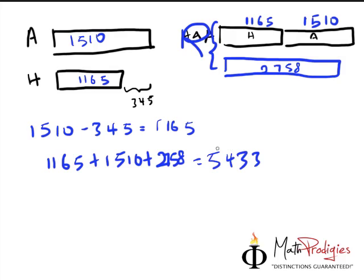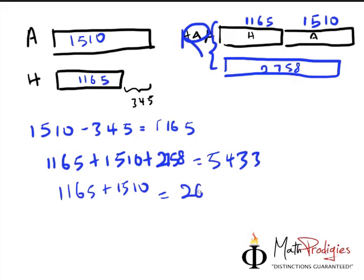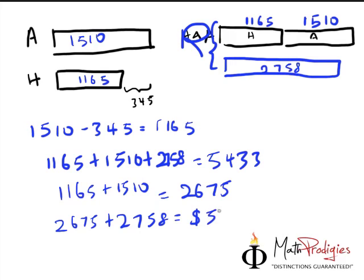So that is the answer. Alternatively, you can do it step by step: 1,165 plus 1,510 equals 2,675, and then 2,675 plus 2,758 gives you the same answer of 5,433. So write your statement: Rosie has 5,433 eggs.